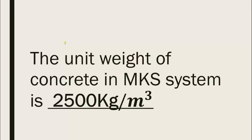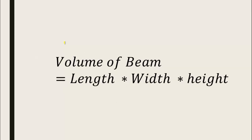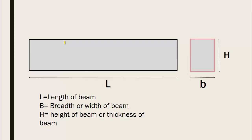The unit weight of concrete in MKS system is 2500 kg per meter cube. And the volume of the beam can be determined by multiplying its dimensions: length multiplied by width multiplied by height. In this side you can see a simple beam whose length, breadth, and height are represented by L, H, and B respectively.